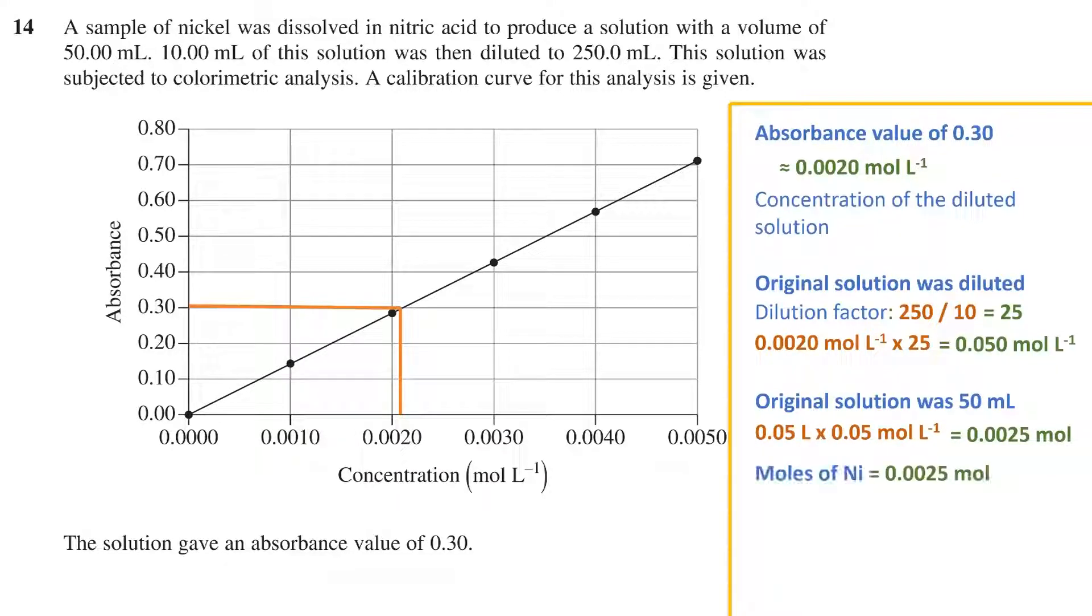The number of moles of nickel is 0.025. Looking at the reference periodic table, we get the molar mass of nickel, which is 58.69 grams per mole. So finally, to get the mass of the nickel, we multiply the number of moles by the molar mass, which gives us 0.15 grams.